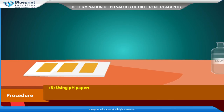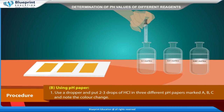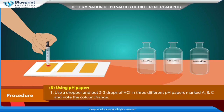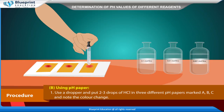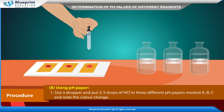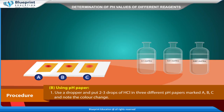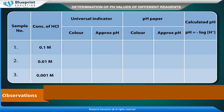Procedure using pH paper: Use a dropper and put 2 to 3 drops of HCl on 3 different pH papers marked A, B, and C. Note the color change in each.